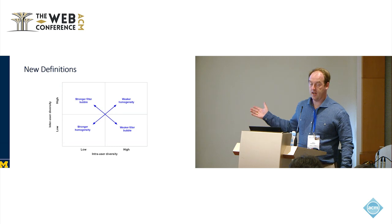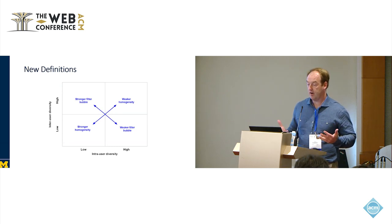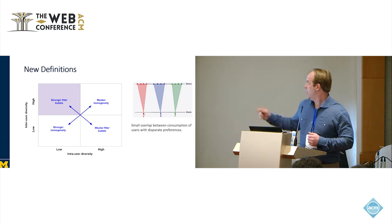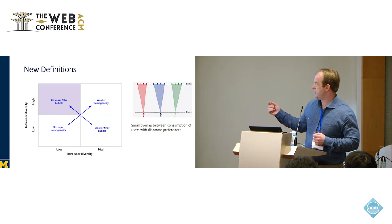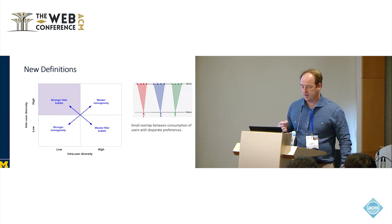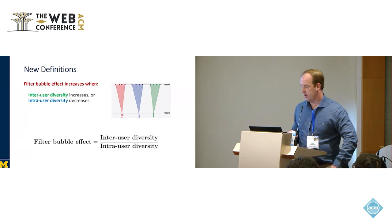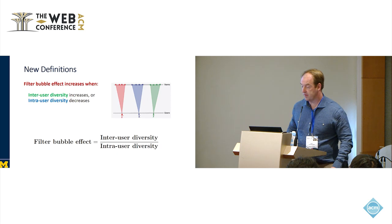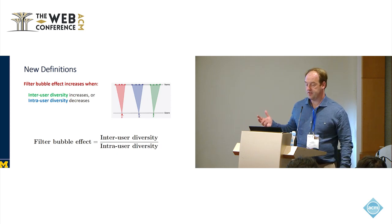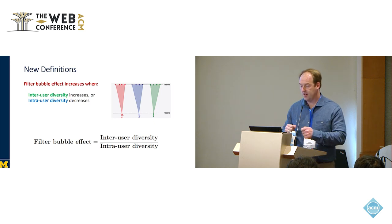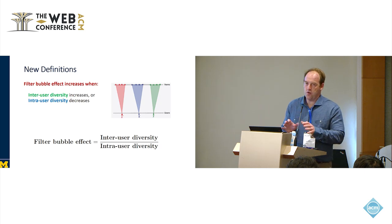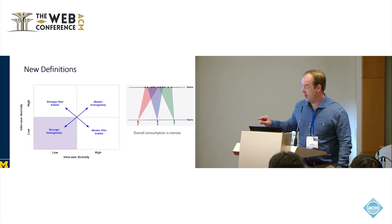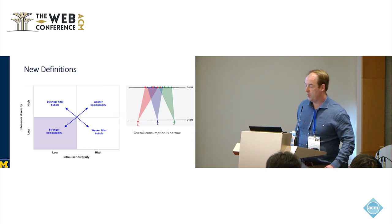We can plot intra-user diversity on the x-axis and inter-user diversity on the y-axis, and look at how they interact together. We'll first examine this box in the upper left, which we call strong filter bubbles. If you have high inter-user diversity and low intra-user diversity, the overlap of the items that agents are consuming is not very large. As intra-user diversity decreases, the filter bubble effect is increasing. We measure this as the ratio between inter and intra-user diversity. If everything is Gaussian, this basically measures the overlap. Strong filter bubble is upper left, and weak filter bubble is lower right.